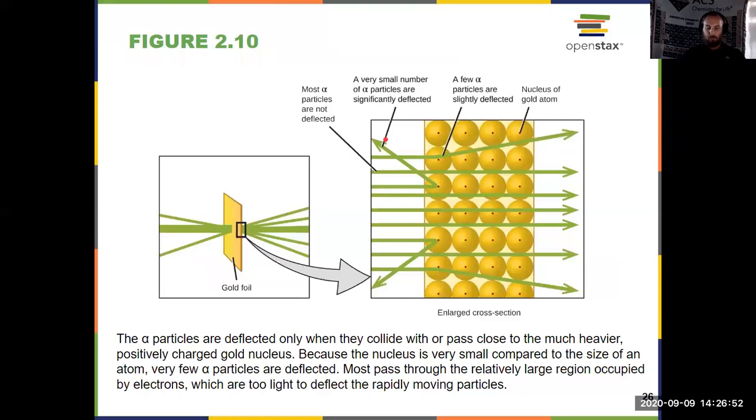So Thompson and Millikan gave us the electron. Rutherford gave us the proton and nucleus. So what was left?